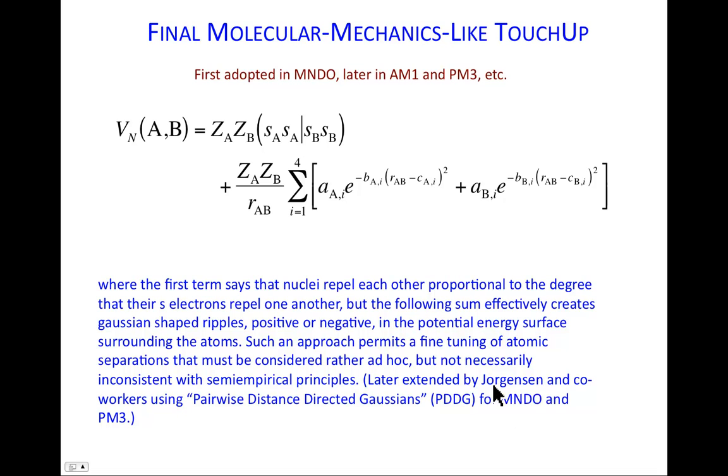Subsequently, and much more recently, Bill Jorgensen and co-workers have taken this idea and refined it. They called it a pairwise distance-directed Gaussian approach, PDDG. So you will see certain semi-empirical models like MNDO, Dewar's Modified Neglect of Differential Overlap, and PM3, Parameterized Model 3. This model is actually in use today.